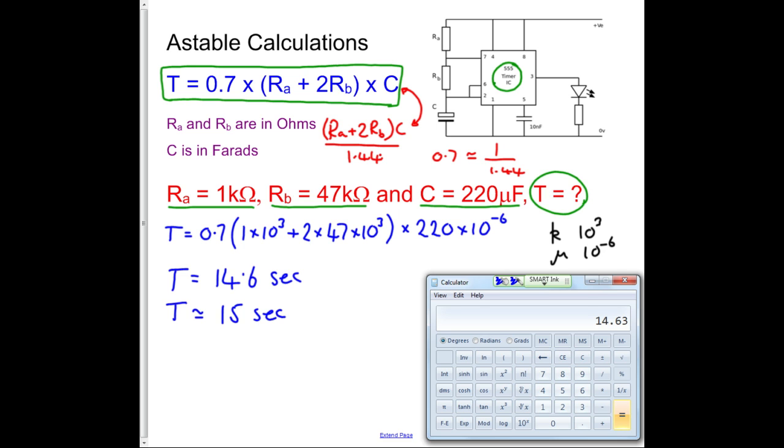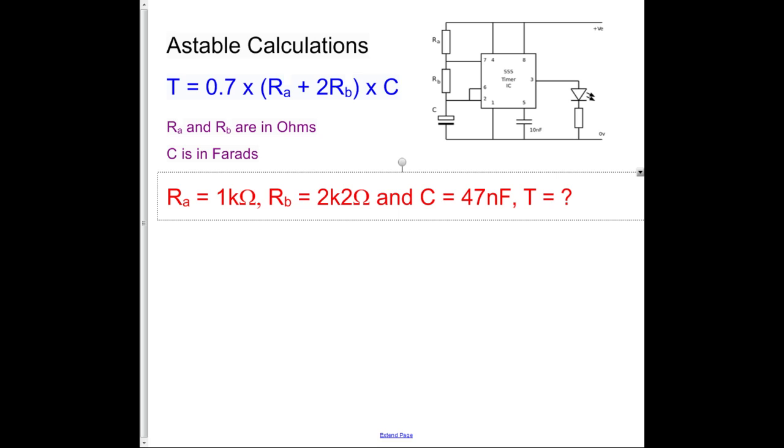Let's have another example. Here's a second example. So again, we can see we've got Ra is 1 kilo ohm, Rb is 2k2. Now 2k2 means 2,200, which means 2.2 kilo ohms, which means 2.2 times 10 to the 3. That's what this k notation in the center means. And our C is 47 nanofarads this time. Now nano is equivalent to 10 to the minus 9, so that's another one we have to know. And again, we're being asked to find the time. So let's start where we always start, with our equation.